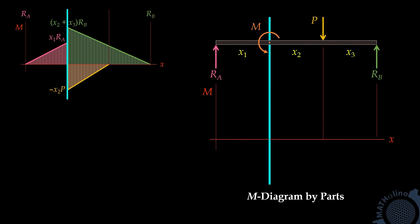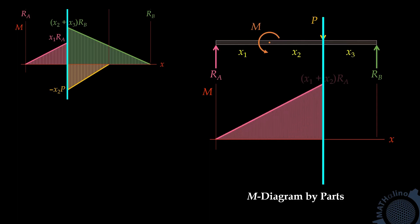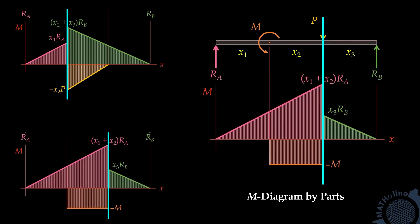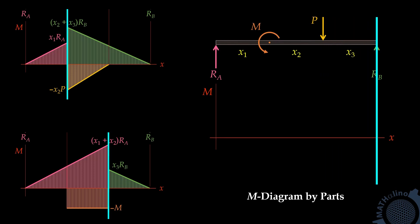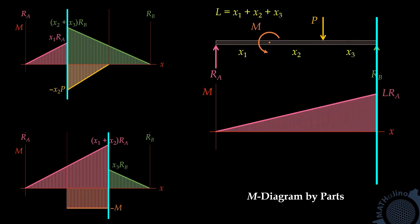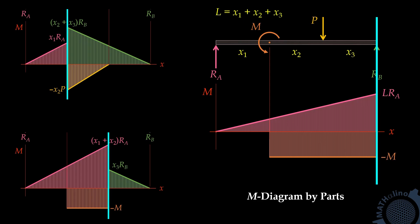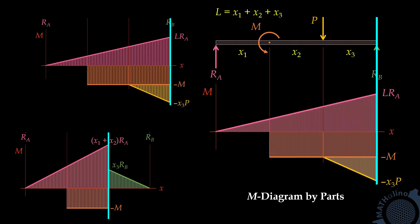Let us say that we are going to select the location of force P as our moment center. This is the moment diagram due to RA about the moment center. And this is the moment diagram due to concentrated load M about the moment center. And this is the moment diagram due to reaction RB. Now, what will be the moment diagram by parts if the moment center we choose is the right end of the beam? We have the moment diagram due to RA, the moment diagram due to M, and the moment diagram due to P.